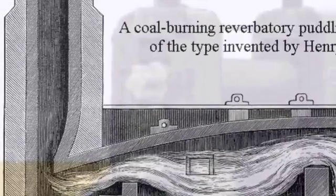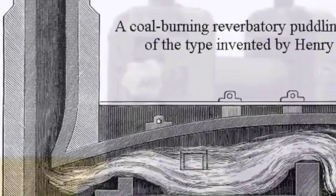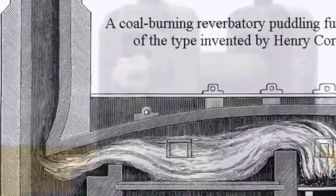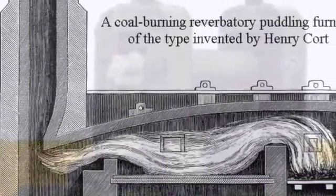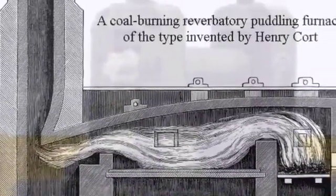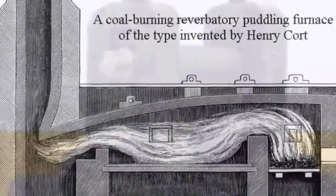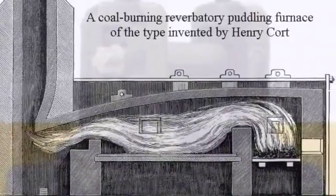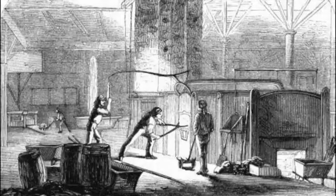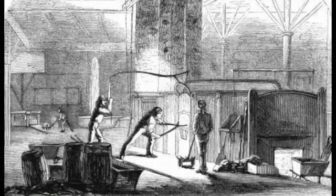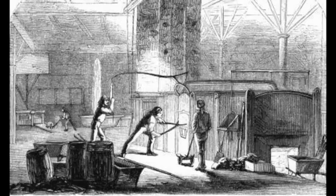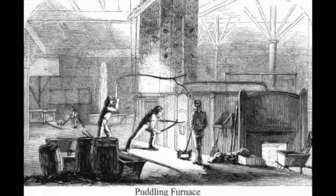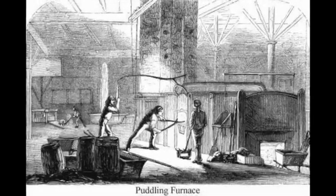In 1784, Henry Cort revolutionized the process of iron production, replacing human labor with mechanization. Cort developed a furnace with mechanized rollers, as well as a different heating method to stir out impurities in crude iron. His innovations led to massive growth in the production of iron in Britain, quadrupling overall production in the 20 years following the invention of his furnace.